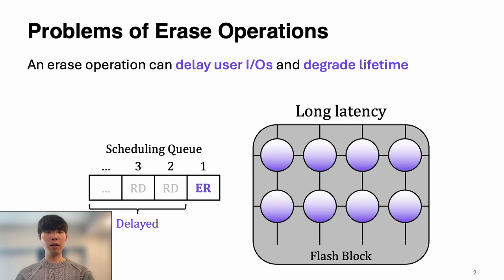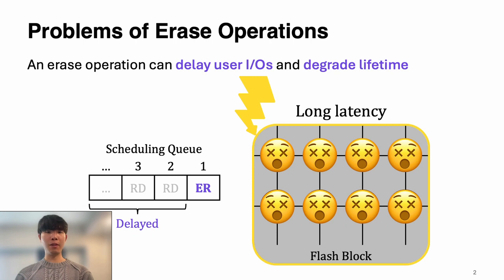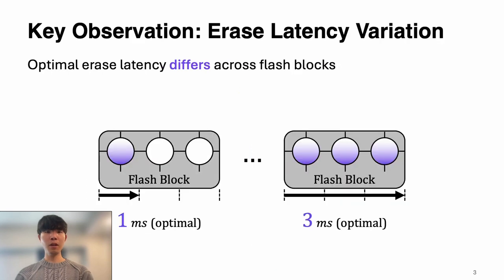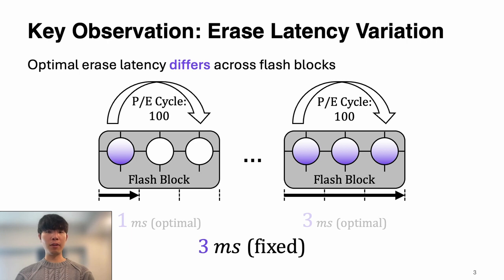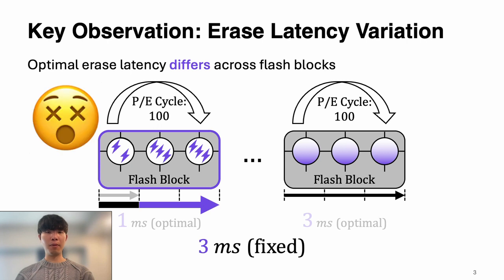However, long latency of erase operation can delay user I/Os, and long latency with high voltage damages flash cells, degrading lifetime. So our goal in this work is to minimize erase latency. We found the erase latency differs across flash blocks even in the same PE cycles. But NAND flash memory has used long fixed latency because it is challenging to identify their difference. As a result, flash cells in a block can be over-erased, degrading lifetime and performance.